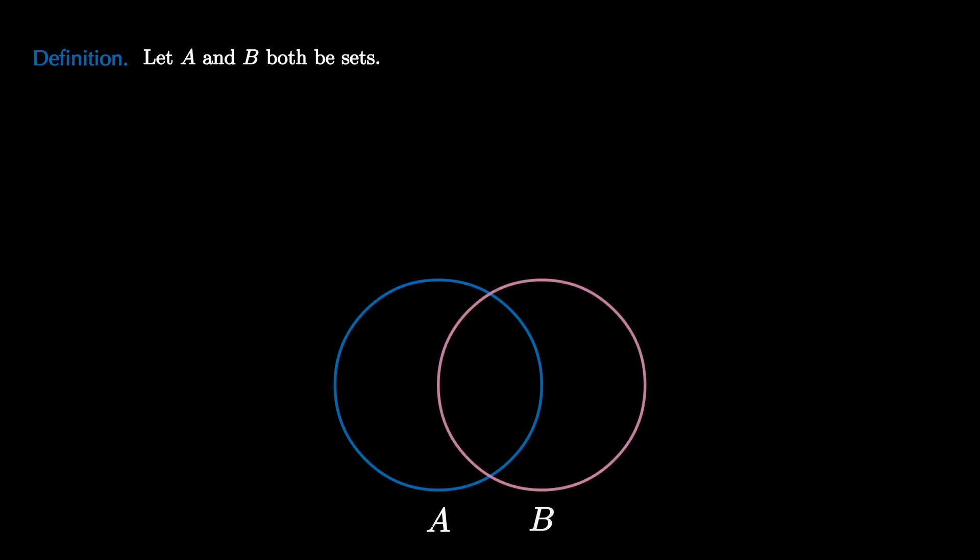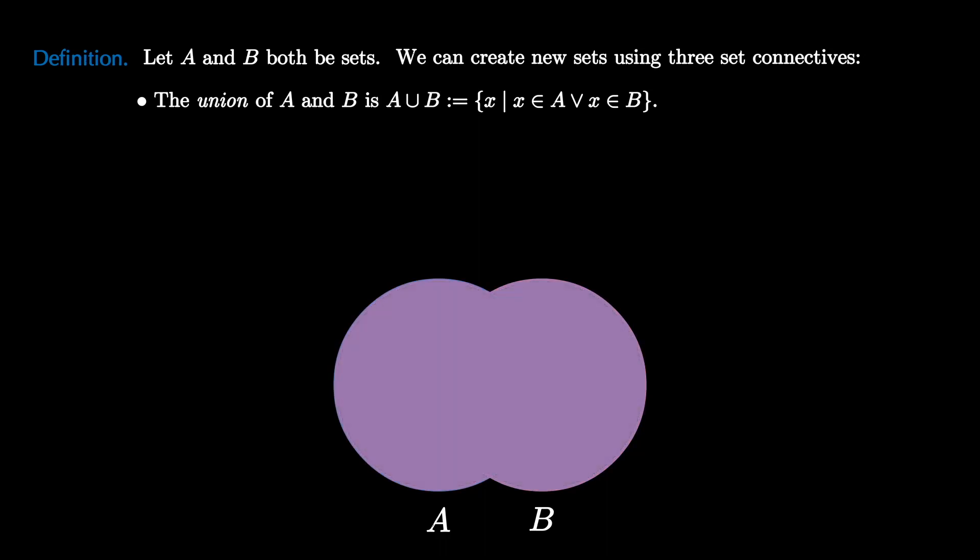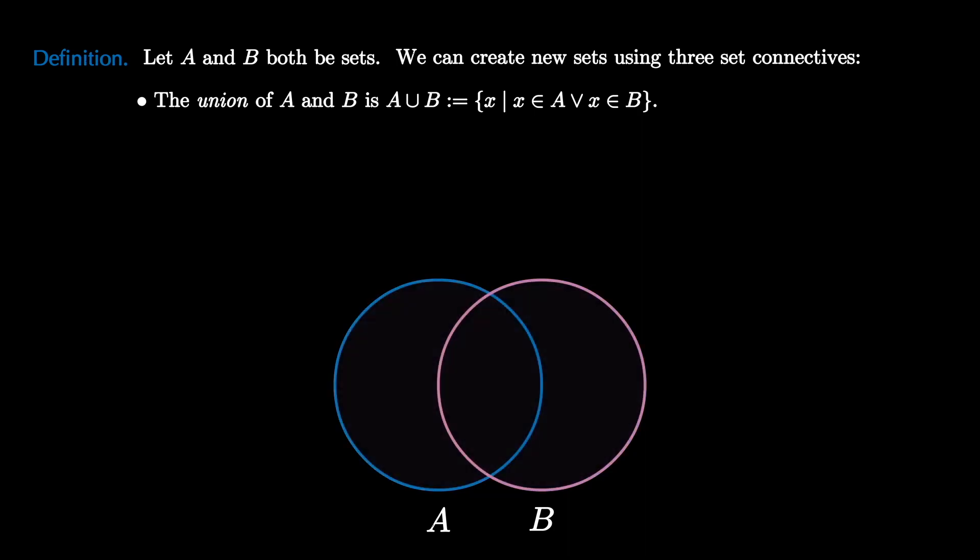Since sets are built from predicates and predicates are related to propositions, it makes sense that there will be set theoretic interpretations of the logical connectives. Let A and B both be sets. We can depict A and B with circles that are labeled by the appropriate letter. Now we can create new sets using three elementary set connectives. First, the union of A and B, denoted A union B, is the collection of x such that x is in A or x is in B. This is the set theoretic interpretation of the OR statement.